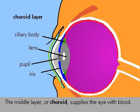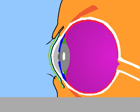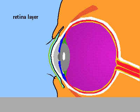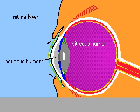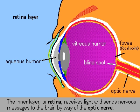The middle layer or choroid layer supplies the eye with blood. The inner layer or retina receives the light image, converting it into impulses that are sent through the optic nerve to the brain.